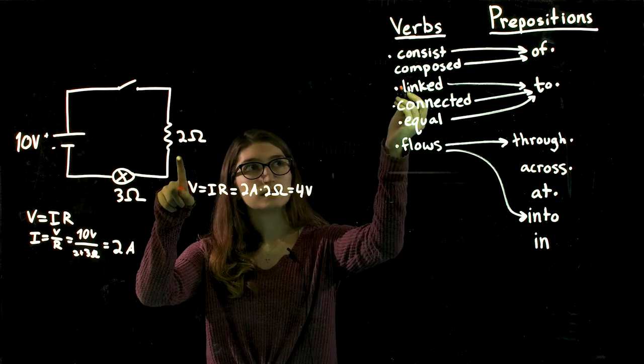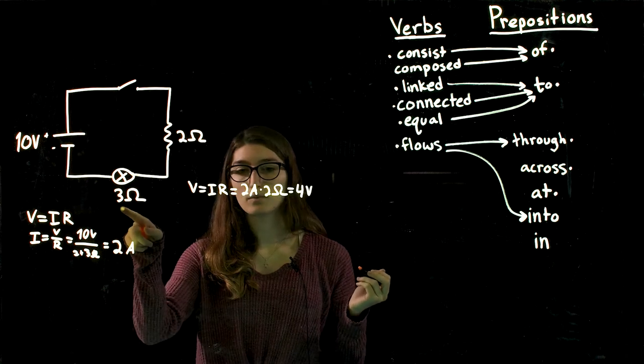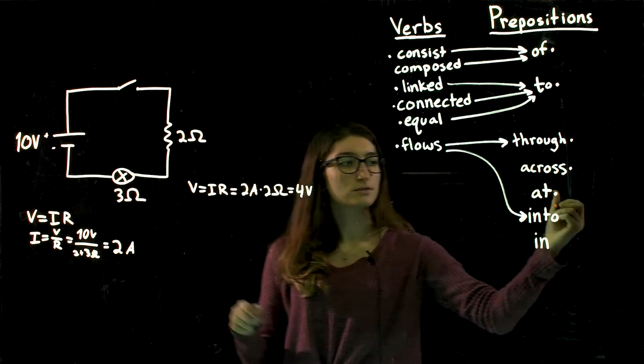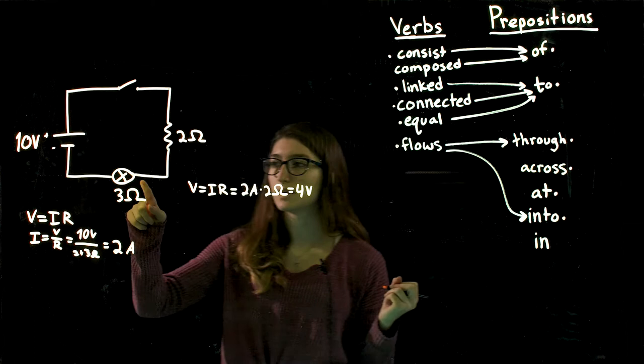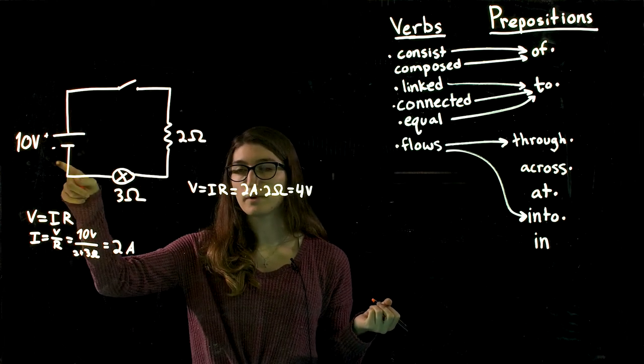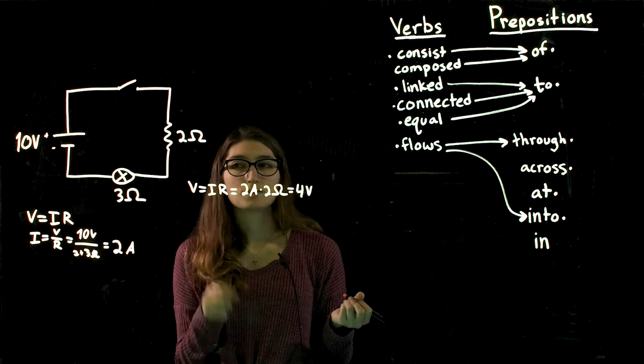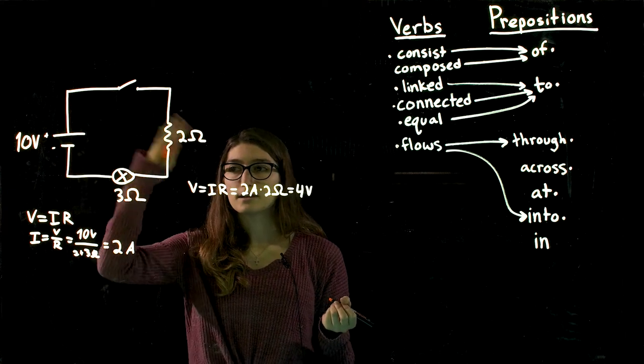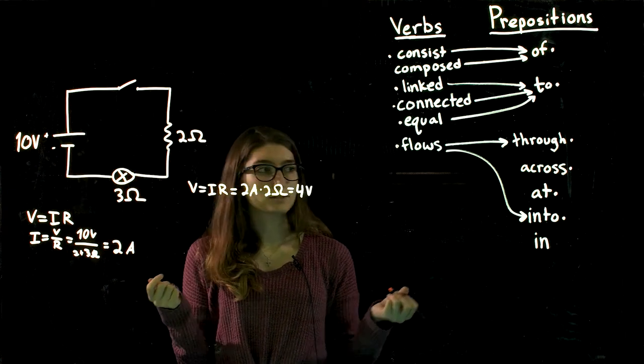This is then linked to the light bulb, where current flows into the light bulb, lights it up, and then flows out of the light bulb and back into the battery. So currently, everything is connected in series in our circuit.